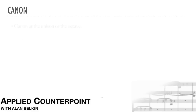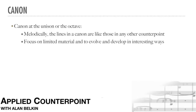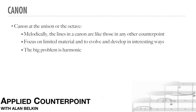We'll start with the most common example: canon at the unison or the octave. From a melodic point of view, the lines in a canon are like those in any other counterpoint — they need to focus on limited material and to evolve and develop in interesting ways. The big problem in this kind of canon, however, is harmonic. Since the following part, by definition, has exactly the same notes as the leading part, how can we prevent the harmony from going around in circles?